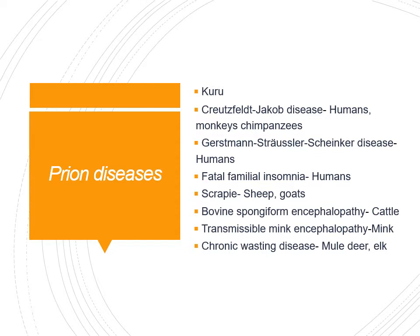Kuru is very important — it is seen in cannibalism. Creutzfeldt-Jakob disease is the most common among the prions. These two to three diseases must be learned, as they are the diseases caused by prions in human beings.